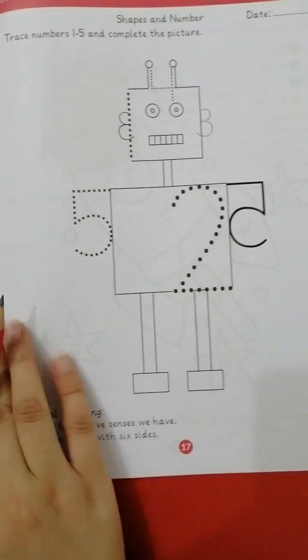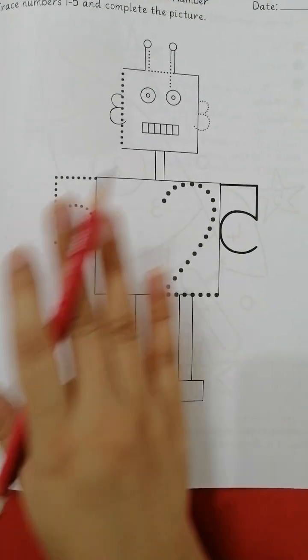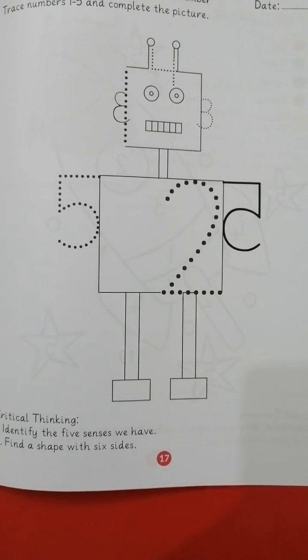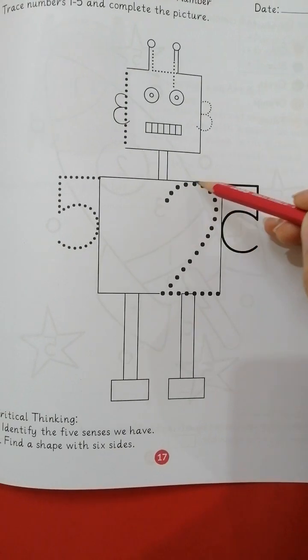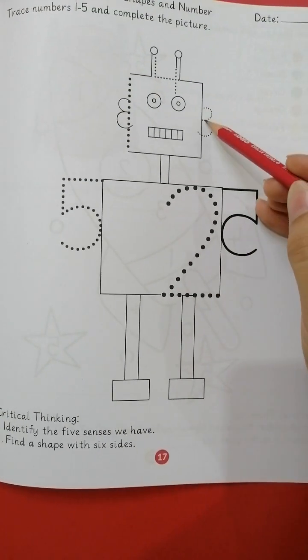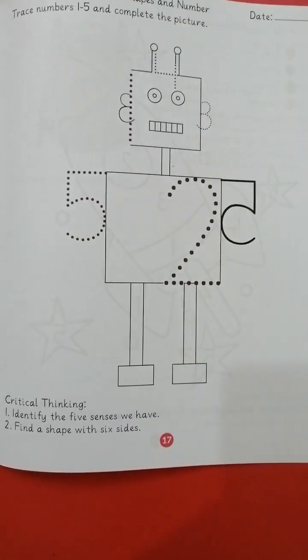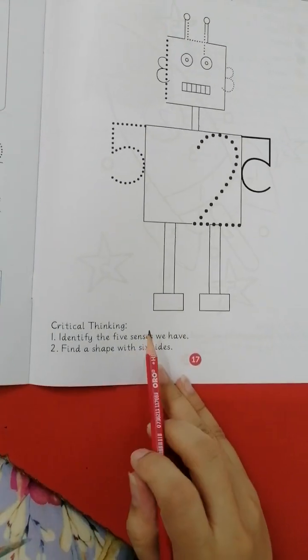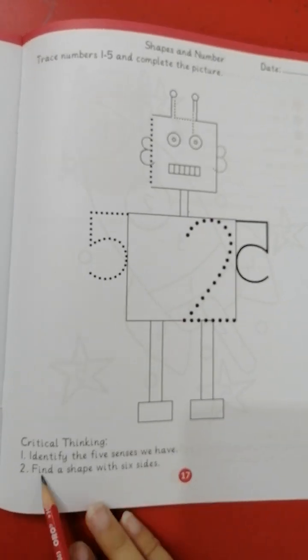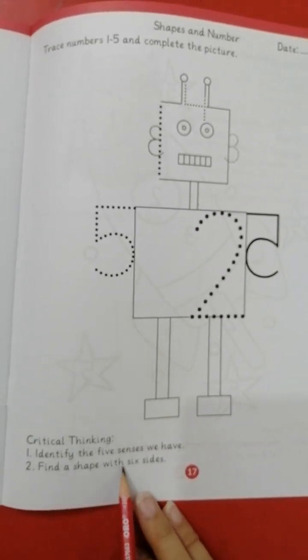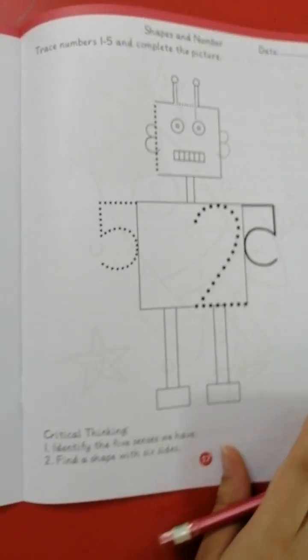Next is trace numbers one, two, five, and complete the picture. We have given numbers over here. You have to trace it. Like number one, two, three, four, five. And then color it. Identify five senses we have. Find a shape with six sides. This is your critical thinking work.